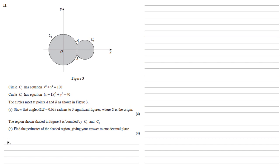Circle C1 has equation x squared plus y squared equals 100. Circle C2 has equation x minus 15 all squared plus y squared equals 40.